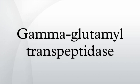GGT catalyzes the transfer of the gamma-glutamyl moiety of glutathione to an acceptor that may be an amino acid, a peptide, or water. GGT plays a key role in the gamma-glutamyl cycle, a pathway for the synthesis and degradation of glutathione and drug and xenobiotic detoxification. Other lines of evidence indicate that GGT can also exert a pro-oxidant role, with regulatory effects at various levels in cellular signal transduction and cellular pathophysiology.